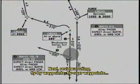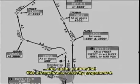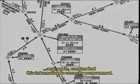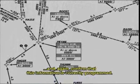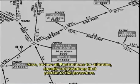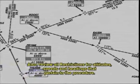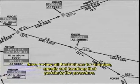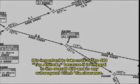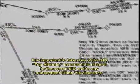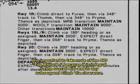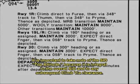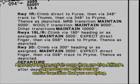Next, review routing, fly-by waypoints, and fly-over waypoints, and confirm that this information is correctly programmed. Also review all restrictions for altitudes, speeds, and headings that pertain to the procedure. It is important to take note of the SID top altitude because it is integral to the overall SID and to any subsequent climb via clearance. A given SID may contain more than one top altitude depending on which runway and/or transition you are flying.